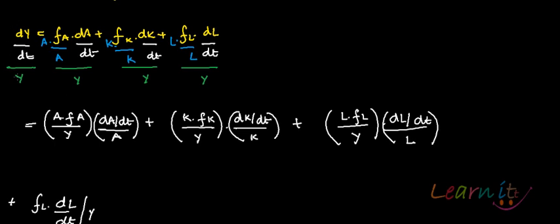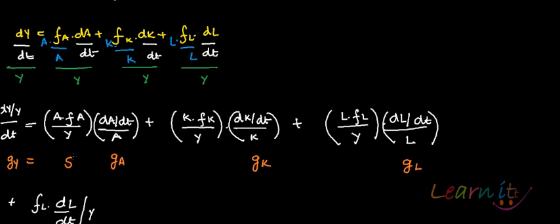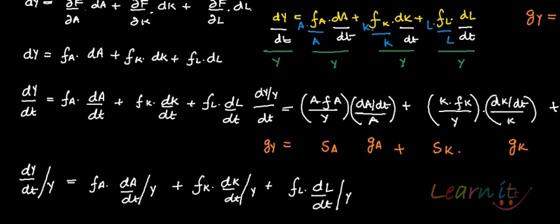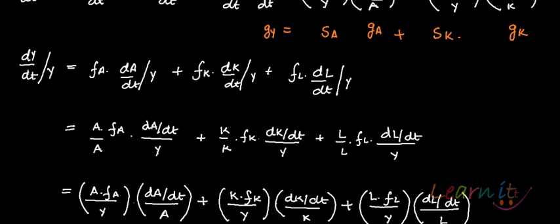The left-hand side, dy/dt divided by Y, is the growth rate of Y. On the right: (dA/dt)/A is the growth rate of A, (dK/dt)/K is the growth rate of K, and (dL/dt)/L is the growth rate of L. The coefficients — A·FA/Y, K·FK/Y, and L·FL/Y — are the shares of technology, capital, and labor in output respectively. So the growth rate of Y is decomposed into the shares times the growth rates of each variable. You can pause and review the neat derivation shown here.